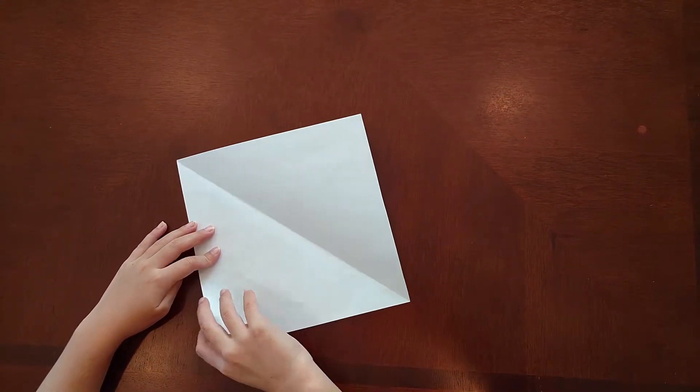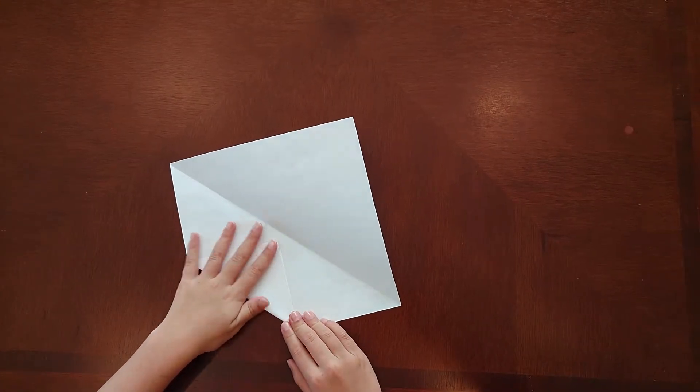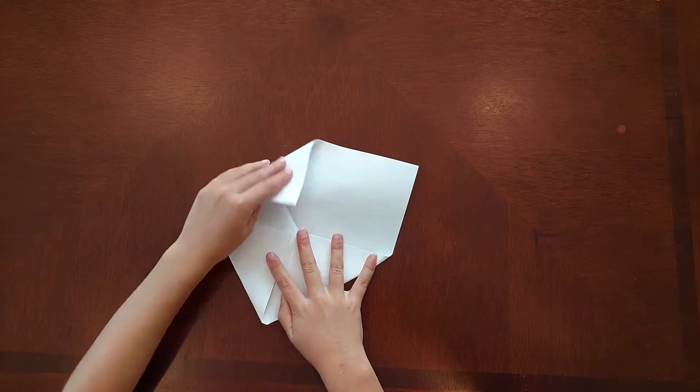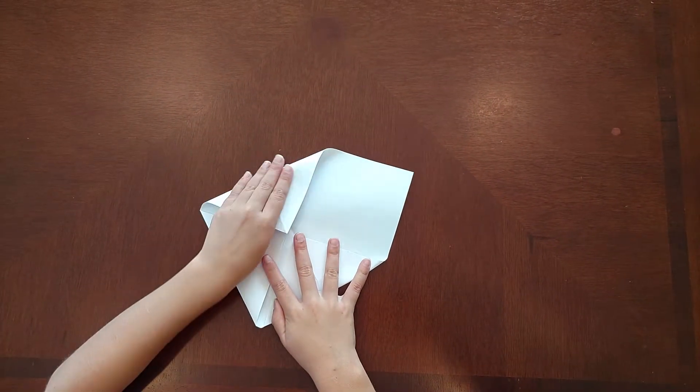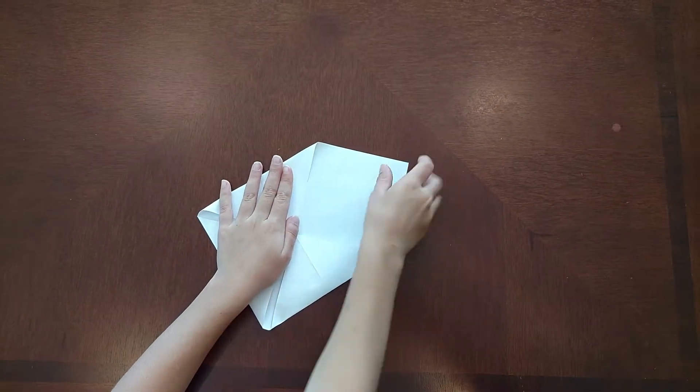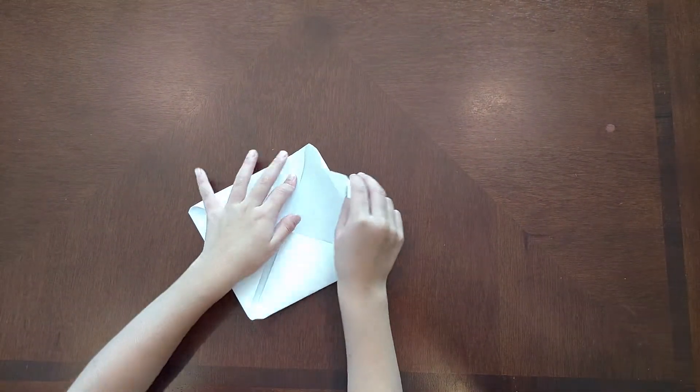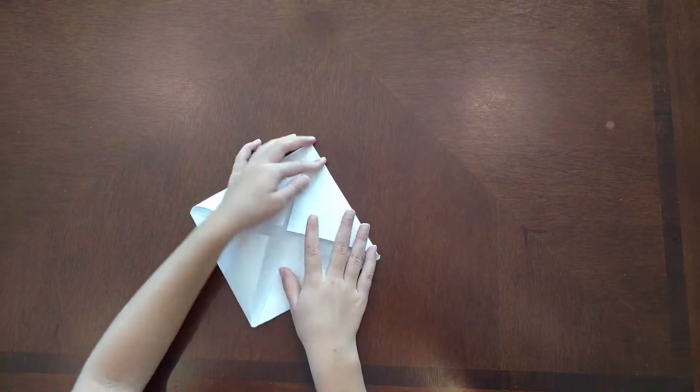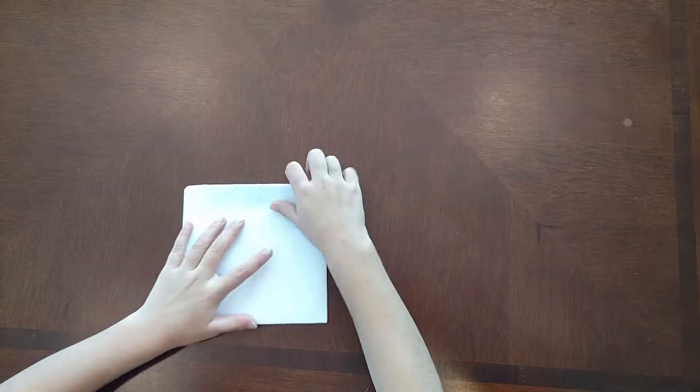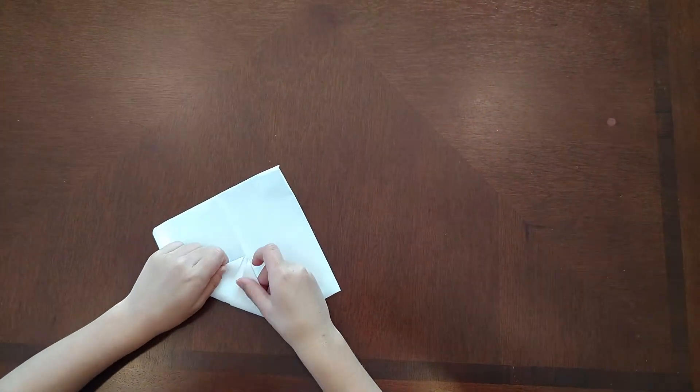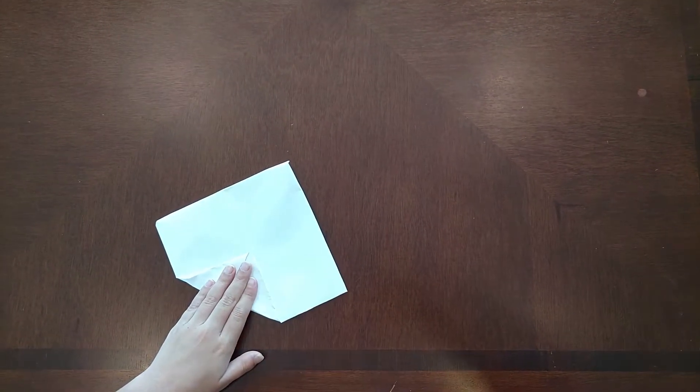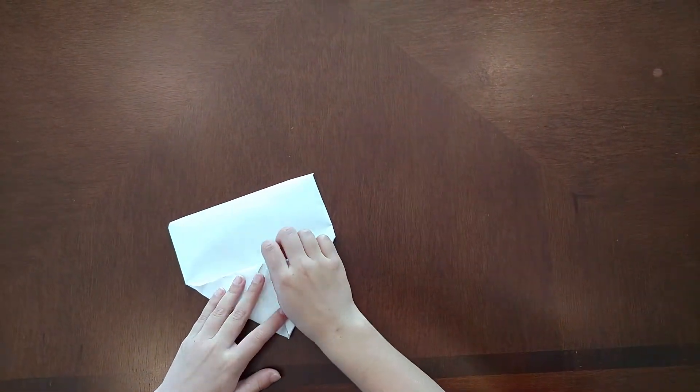Now we're going to fold each corner into the middle. Now it looks like a little bit of a smaller square. You do the same thing to the back. And this line can kind of help you right here to fold it to the line. And that will help you a little.